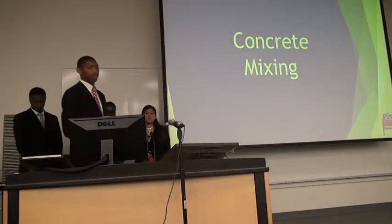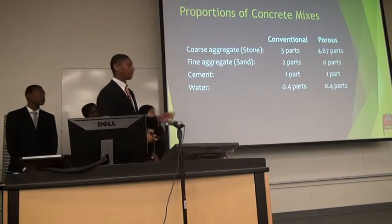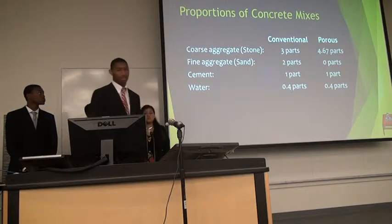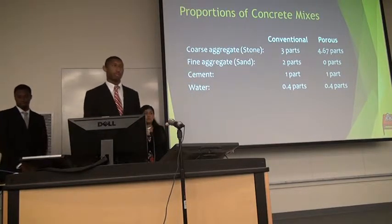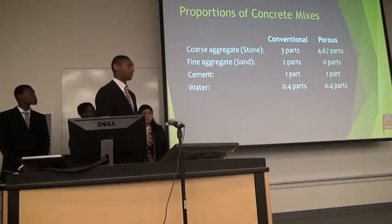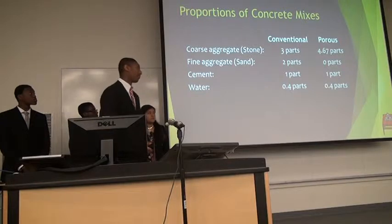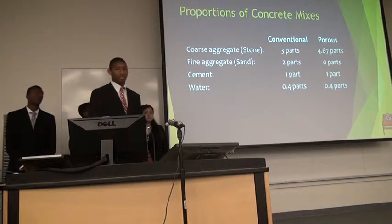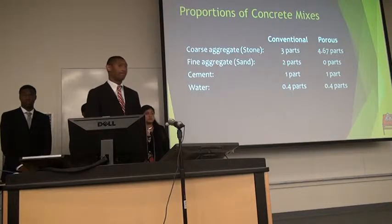Now we'll talk about the process of mixing the concrete. There are different proportions for the two concretes we made — conventional and porous. Parts are basically proportions used in concrete, the same ratio regardless of batch size. For conventional concrete: 3 parts coarse aggregate, 2 parts fine aggregate, 1 part cement, and 0.4 parts water. For porous concrete: 4.67 parts coarse aggregate, no fine aggregate, 1 part cement, and 0.4 parts water.